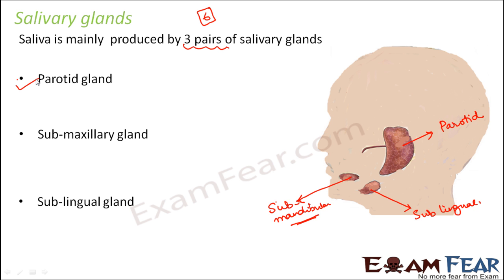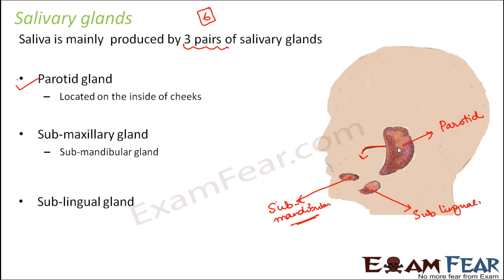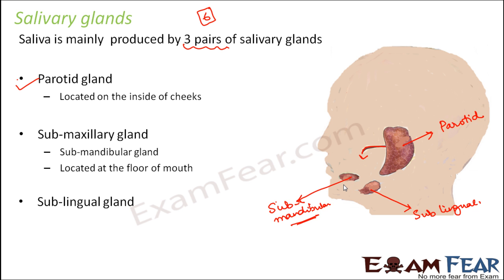The parotid gland is the larger one, located a little higher compared to the other two. The submandibular gland is located at the floor of the mouth, in the lower portion. The sublingual gland is located under the tongue. The salivary glands secrete saliva and pass it into the oral cavity through ducts — tube-like structures. The parotid gland secretes saliva which travels through these tubes and reaches the oral cavity where we can feel its presence.